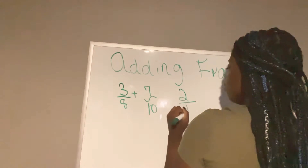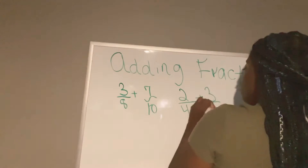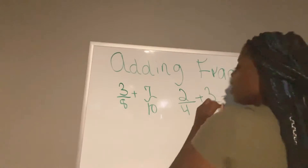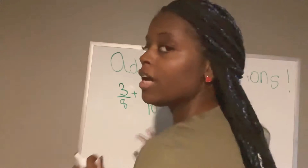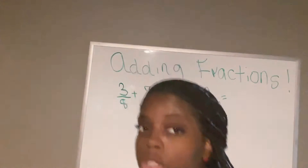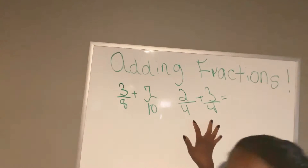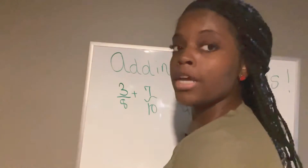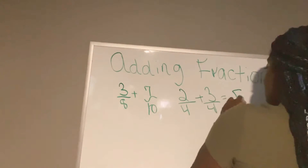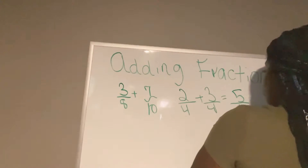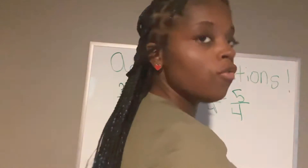Two over four plus three over four. If you ever see a problem like this — the two bottom numbers, if they are the same — you keep the denominator the same. You just add straight across. Three plus two is five. Denominator stays the same, you don't change it. Five over four.